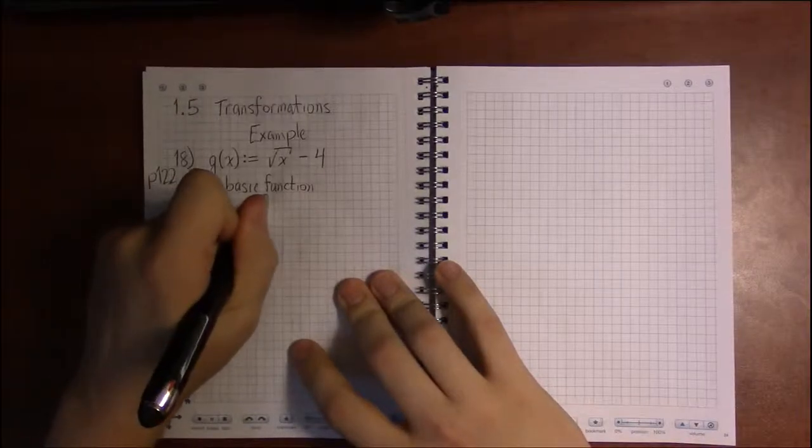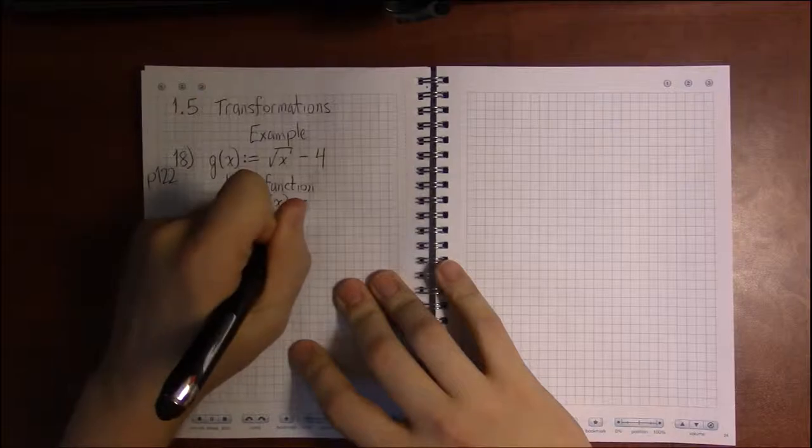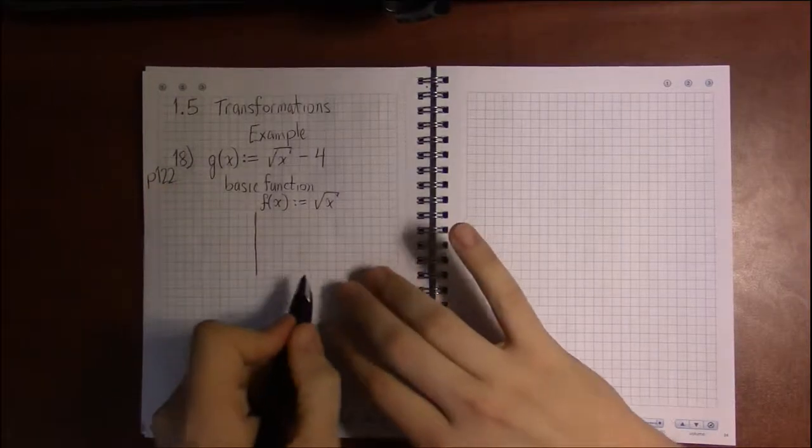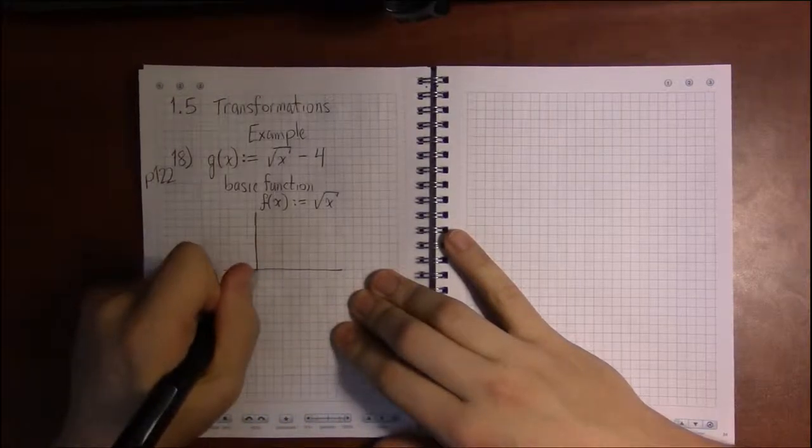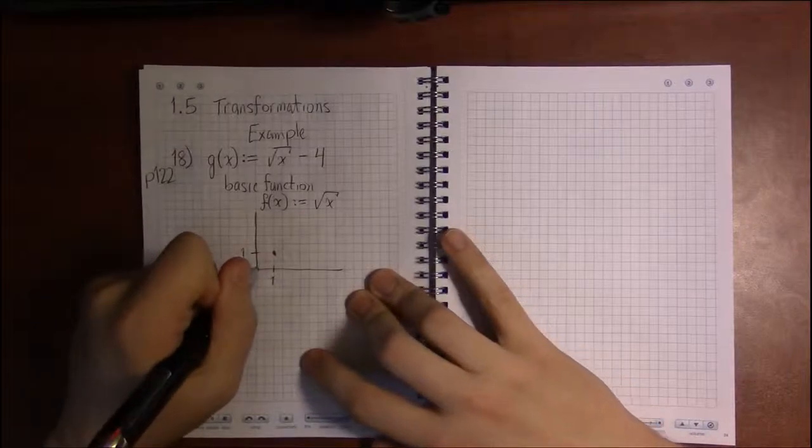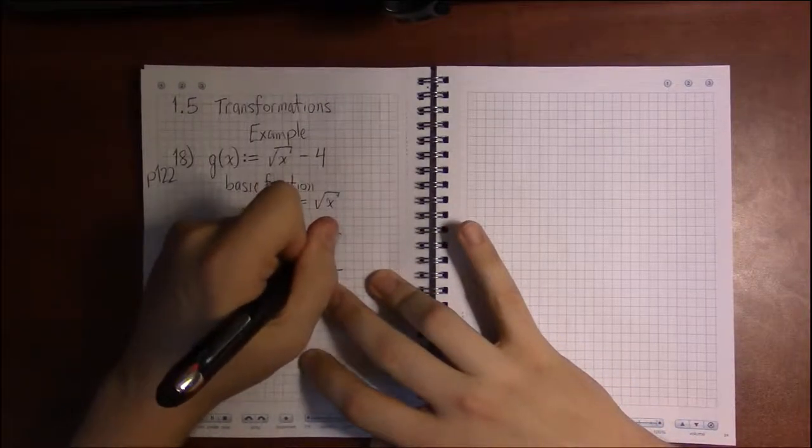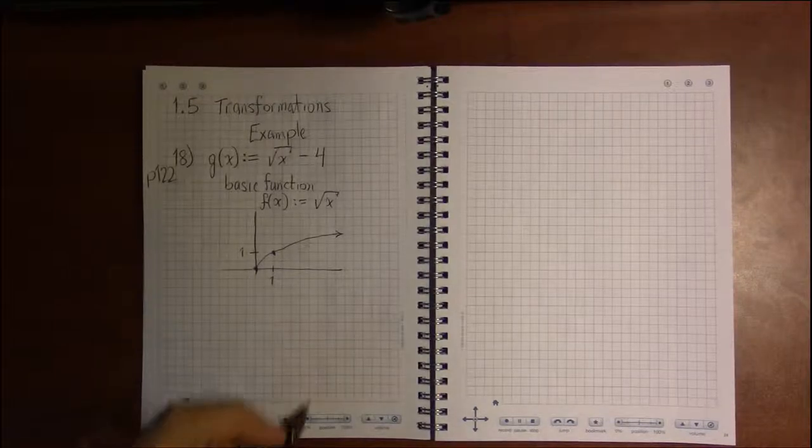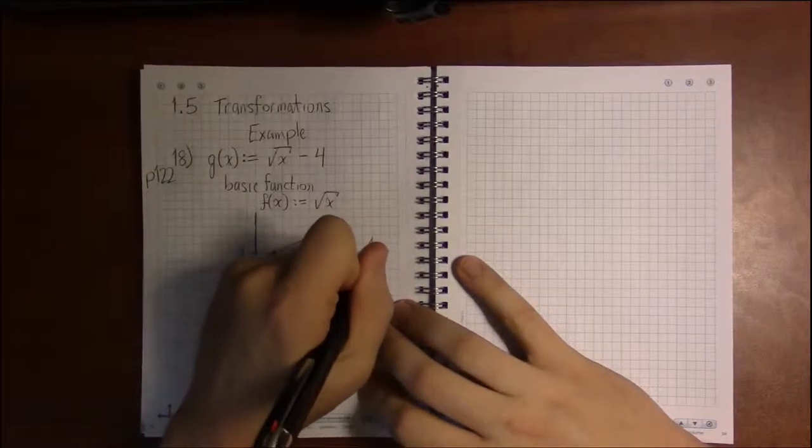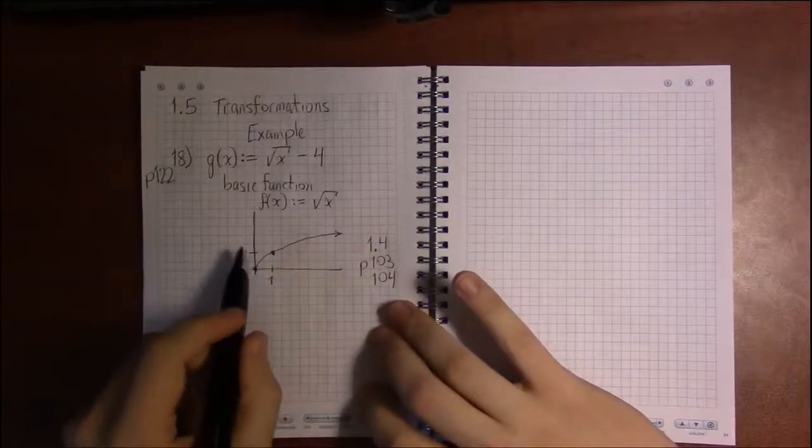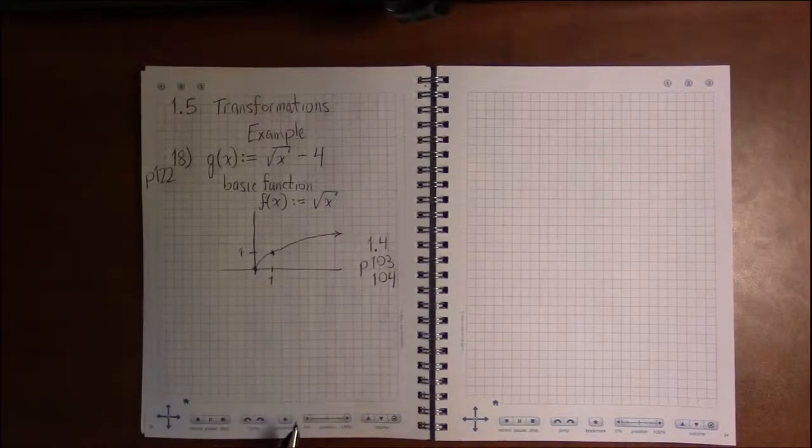So our base function, f, is just square root of x. And its graph looks like the following. It's going to pass through the point 0, 0, and through the point 1, 1, and have this arc to it. You can find all this information in section 1.4 on pages 103 and 104.